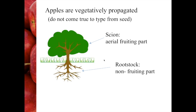Apple trees are vegetatively propagated commercially and also at various points in the breeding program when we want to multiply up selections. An apple tree is made up of two parts: the scion variety, which is the aerial fruiting part — so varieties like Gala, Granny Smith, Honeycrisp, and Red Delicious are scion varieties — and the rootstock, which is the non-fruiting part. The rootstock is more than just the root system; it also extends a few inches above the ground, and you can clearly see on any apple tree where the union has been made.